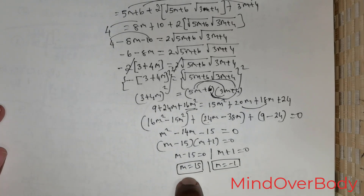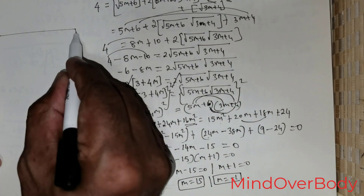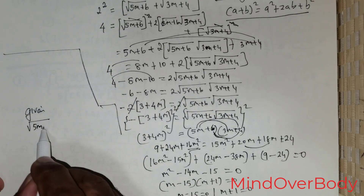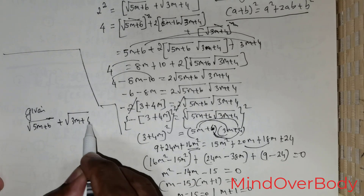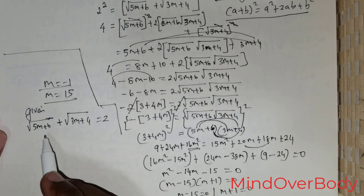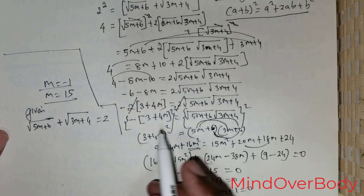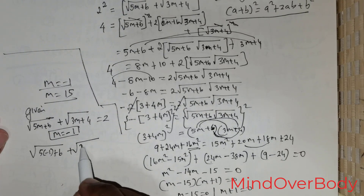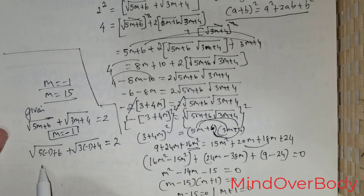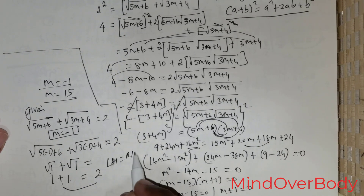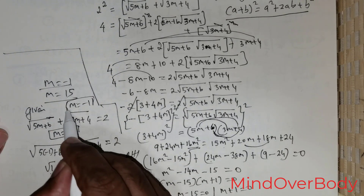Now we are given root of 5m plus 6, plus square root of 3m plus 4 equals 2, and I get the values of m as negative 1 and 15. I need to find out which of these will be the solution. I am going to substitute m equals negative 1: that gives me root of 5 times negative 1 plus 6, plus root of 3 times negative 1 plus 4, equals 2. This gives me root of 1 plus root of 1. Root of 1 is 1, and 1 plus 1 is 2. Left hand side equals right hand side, so m equals negative 1 is clearly a solution.